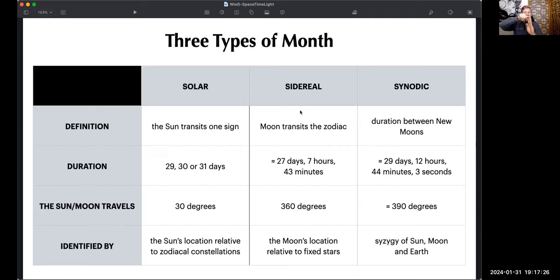However, in the amount of time it takes for the moon to go 360 degrees, in that time, the sun has also moved a bunch of degrees. So getting back to that same point doesn't make it a new moon again. So the synodic month is measured by the duration between new moons. And so this is 29 days, 12 hours, 44 minutes, and 3 seconds approximately. And it takes the moon moving 390 degrees. A full loop around the zodiac plus 30 degrees, plus one more sign. And it is identified by the syzygy of sun, moon, and earth. Syzygy meaning the alignment in a straight line of the sun, moon, and earth.